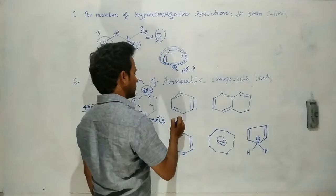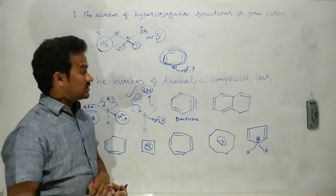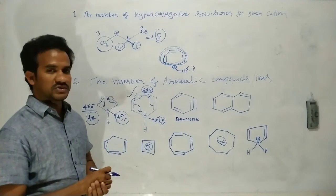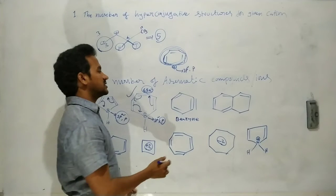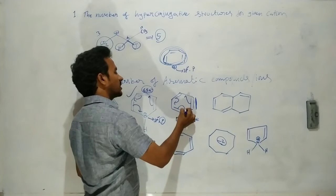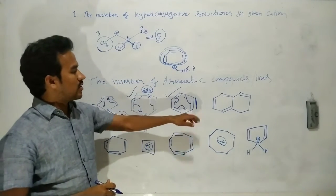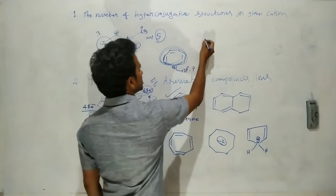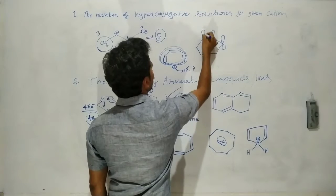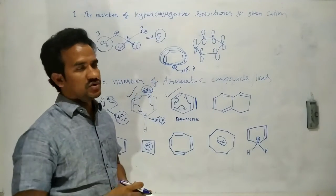The next structure is benzyne. In benzyne, the number of pi bonds is four. However, not all four pi bonds participate in the aromatic conjugation. The benzene ring has every carbon sp2 hybridized, so each carbon has one p orbital perpendicular to the ring plane. These p orbitals are parallel to each other, forming pi bonds in conjugation.